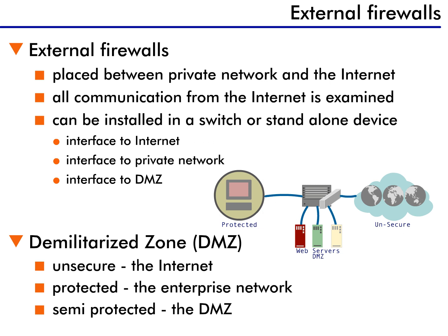Normally, the firewall functions are installed in a switch, a router, or a standalone server. A typical implementation has three interfaces on the firewall: one connection attaches to the Internet, another connection attaches to the internal private network, and the third connection attaches to the DMZ.